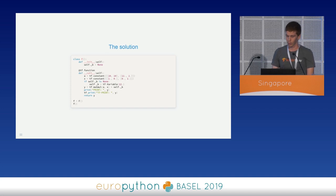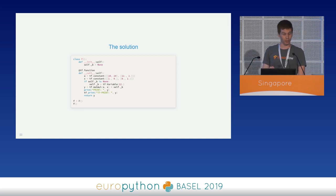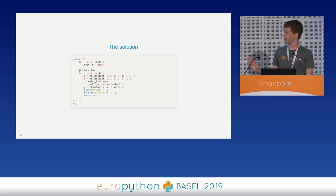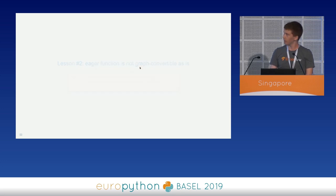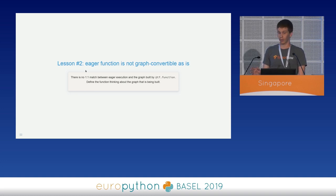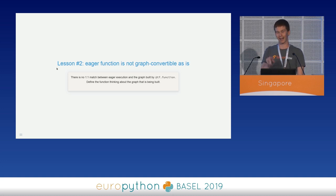The solution is to think about the graph definition while defining the function. We cannot declare a new variable every time the function is called — we have to handle this manually. Declaring a variable as a private attribute of the class and creating it only during the first call, we can correctly define a computational graph that works as expected. This brings us to the second lesson: eager functions are not graph-convertible as they are. There is no guarantee that functions working in eager mode are graph-convertible. Always define the function structure thinking about the graph being built.